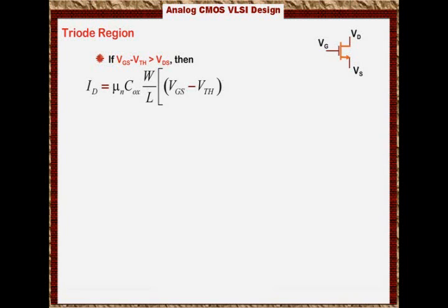That is the overdrive voltage, how strong the channel is, times VDS, that is the voltage from the drain to the source. VDS tells you how much I'm going to pump into the transistor. So the stronger VDS, the more current you have, minus one half VDS squared.